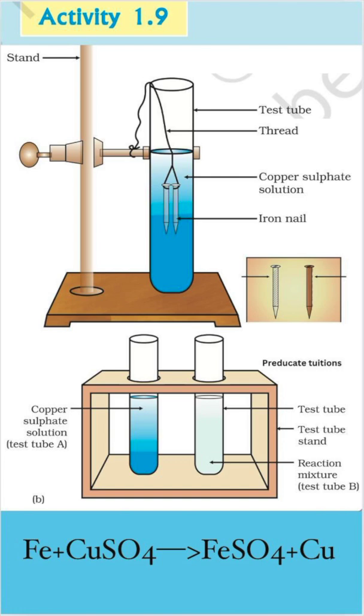Two test tubes, A and B, are taken with 10 milliliters of copper sulfate solution. Also, two nails are taken and cleaned by rubbing with sandpaper, and a thread is tied on one nail and suspended in test tube A. Wait for 30 minutes.